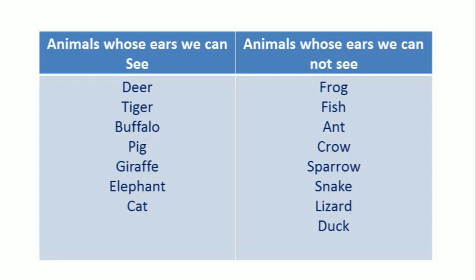So here are animals whose ears we can see, and the second column shows animals whose ears we cannot see. Animals whose ears we can see: deer, tiger, buffalo, pig, giraffe, elephant, cat. Animals whose ears we cannot see: frog, fish, crow, sparrow, snake, lizard, duck. Complete this work in your EVS copy and also in your EVS book.